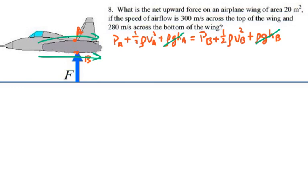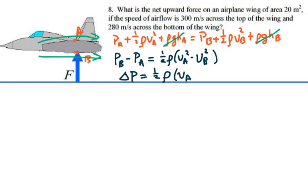So hence, we would have that the absolute pressure at B minus the absolute pressure at A would be equal to one-half ρ times the velocity at A squared minus the velocity at B squared. Just calculating that. So our change in pressure is going to equal one-half the density of air velocity at A squared minus the velocity at B squared.